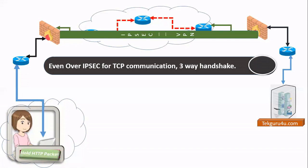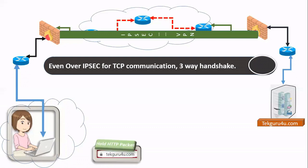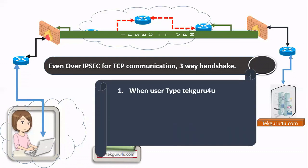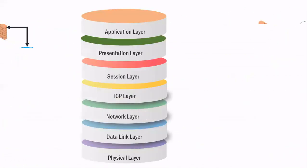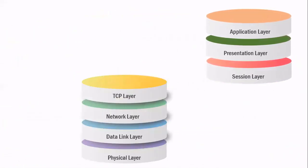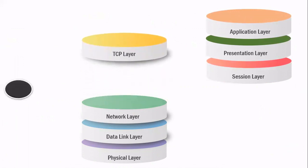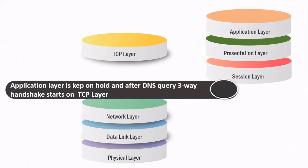So what happens when you type techguru4u.com? That packet is kept on hold because there are many other processes that need to happen first. When you type techguru4u.com in the browser, even if the website is HTTP or HTTPS, it doesn't matter — the first thing that will happen is a DNS query. Your DNS packet will go, your application layer is kept on hold, and the rest will work in TCP. Your DNS is an application layer protocol — that's the first packet that goes from the system.